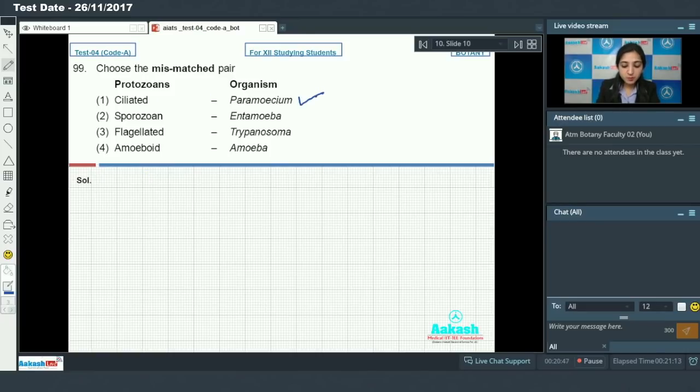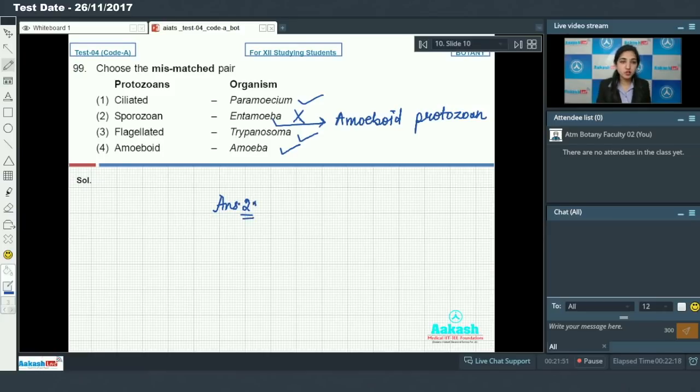Paramecium is the ciliated protozoan. Entamoeba is not sporozoan. It is an amoeboid protozoan. It is an amoeboid protozoan which have pseudopodia as its locomotory structure. Trypanosoma is a flagellated protozoan. Correct. Amoeba is an amoeboid protozoan. This is also correct. So out of these four Entamoeba is a sporozoan is a mismatched pair. So answer to this question is option number 2.